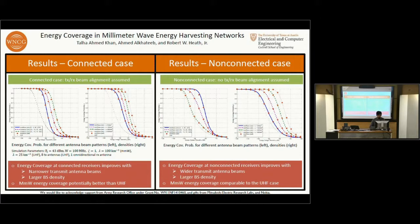In this scenario, the energy coverage probability improves with wider antenna beams and larger base station density. In both plots, we can see that energy coverage probability with a millimeter wave system is comparable to or better than that for a UHF system, a lower frequency system operating at, for example, 2.1 gigahertz compared to a millimeter wave system operating at 28 gigahertz.